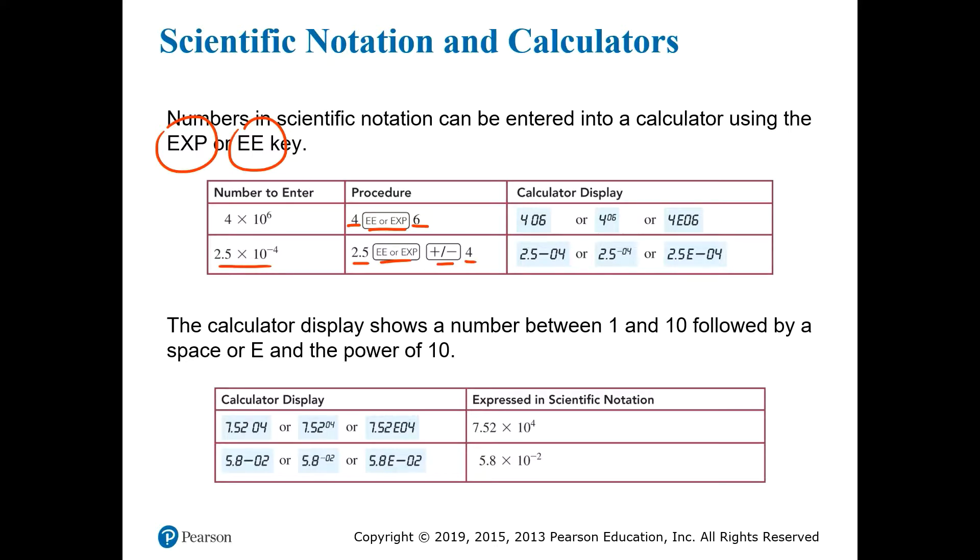Remember, on most calculators, the key to make a number negative is labeled plus minus, like this, but on some, it looks like a minus sign in parentheses, like this.